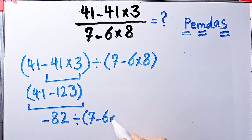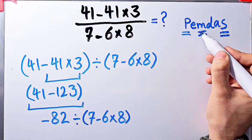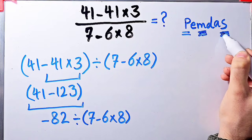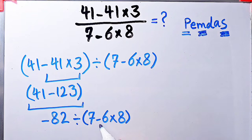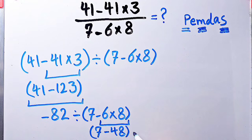Now the question is negative 82 divided by 7 minus 6 times 8. Again, we simplify these parentheses. Inside these parentheses, we have subtraction and multiplication. First, we do this multiplication because multiplication has higher priority than subtraction. Negative 6 times 8 equals negative 48. Now we have 7 minus 48 inside these parentheses, and 7 minus 48 equals negative 41.